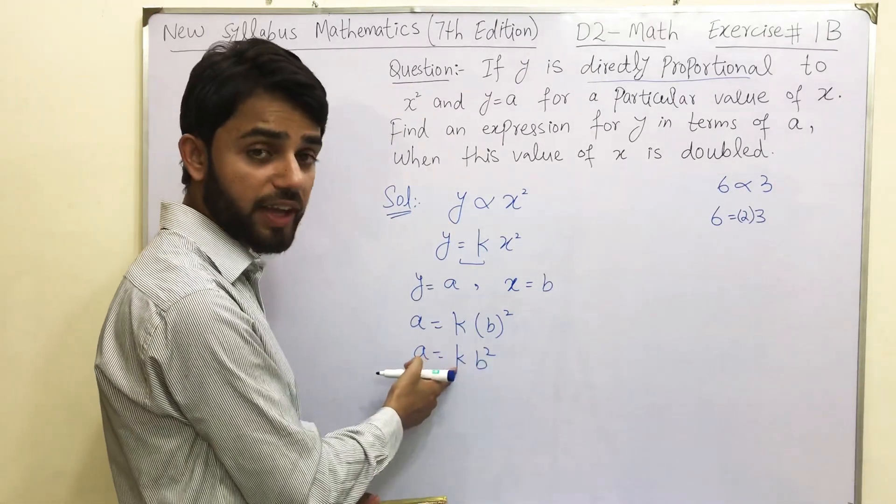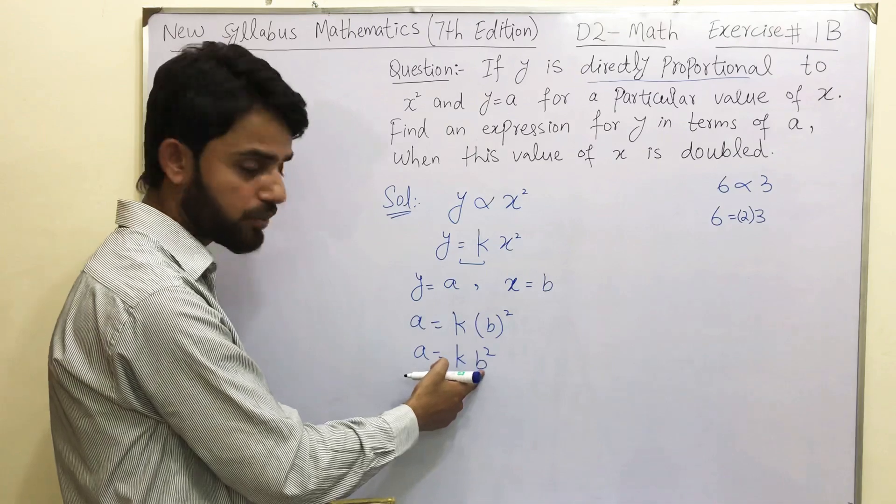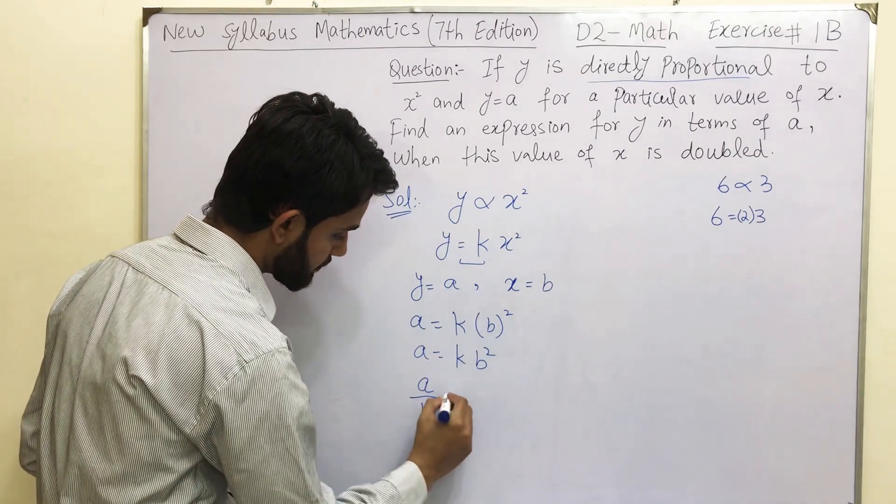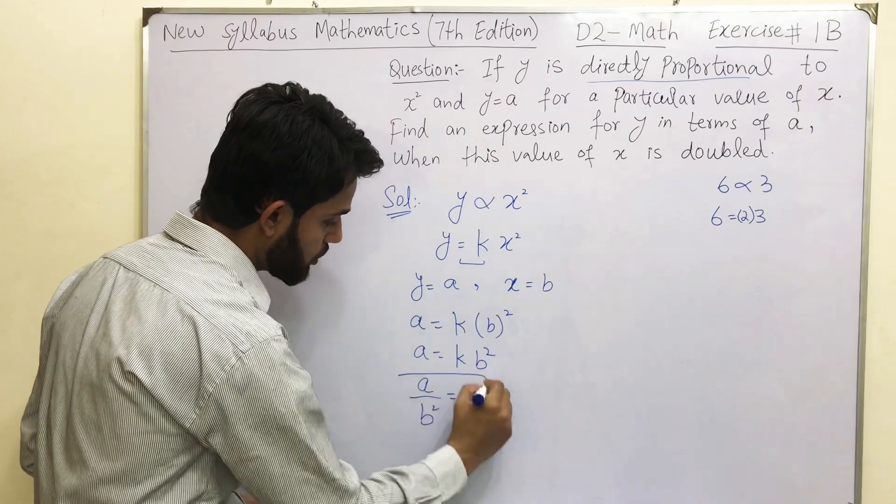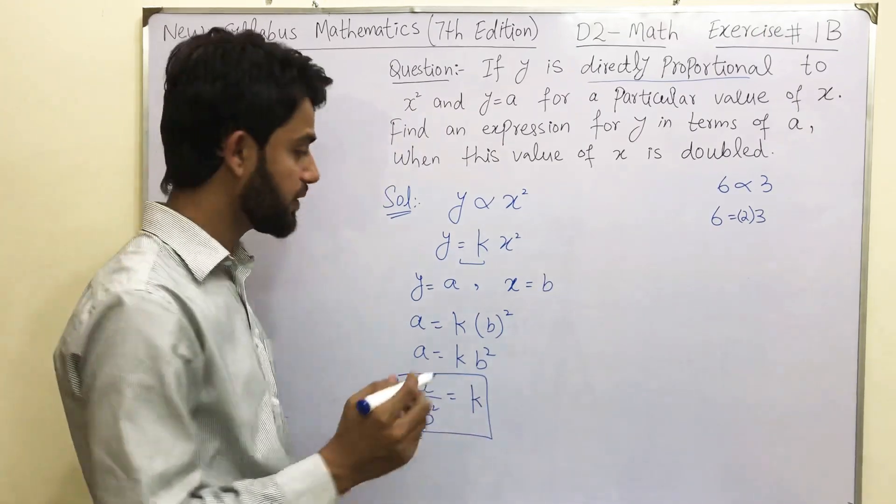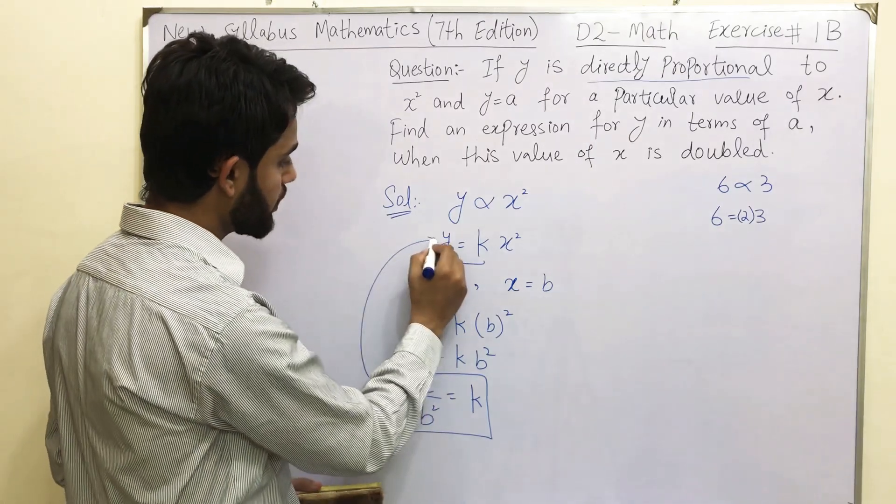We need to find out the value of k. So obviously this b square we are going to shift it to the other side. So we got that k is equal to a over b square. This is the value of k. Plug in this value in this step.